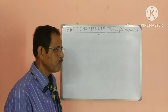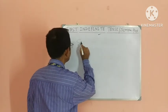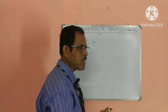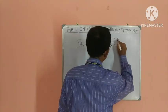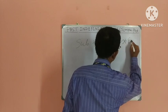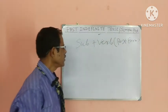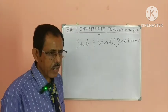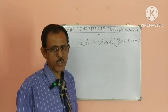Very easy. First of all, write the subject, then the past form of the verb. To make it clear, I am taking some examples — please see.